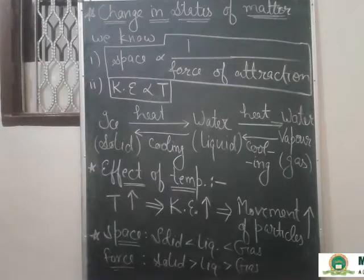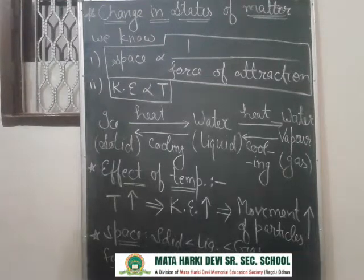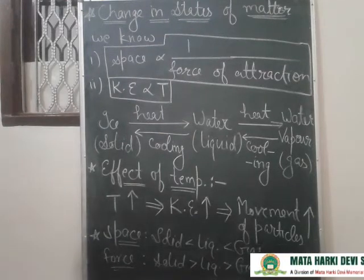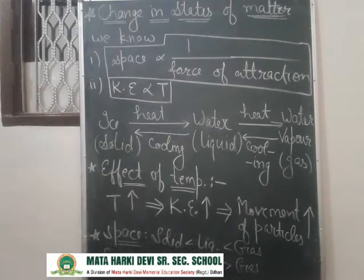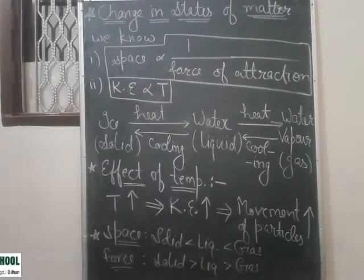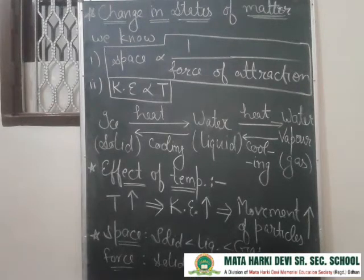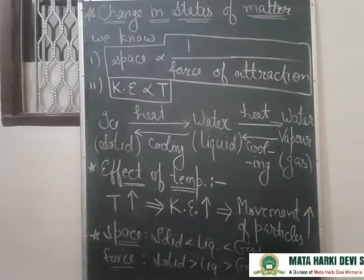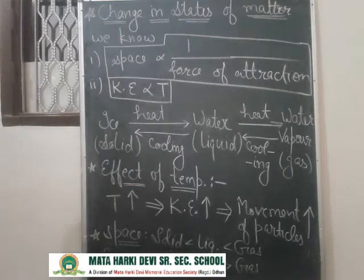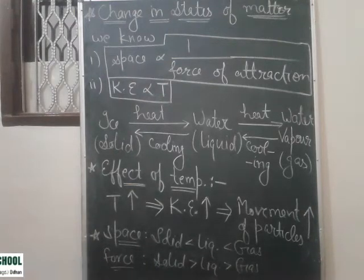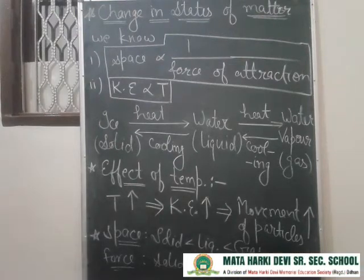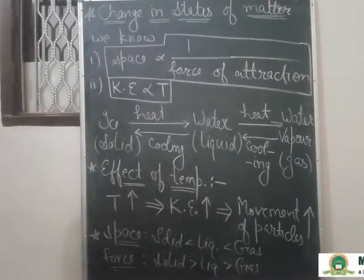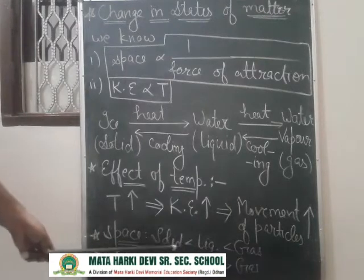The particles start to move rapidly and fast. At one stage, the temperature becomes so high that the kinetic energy is enough to overcome the force of attraction between the particles. The space between particles increases, and when space increases, force of attraction decreases. So the solid state of matter expands and the particles move more freely — the solid converts into liquid.